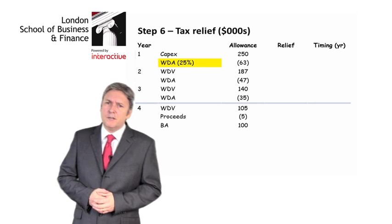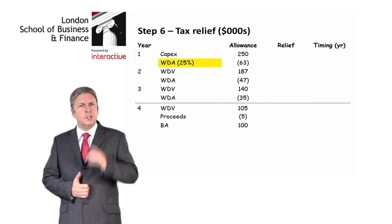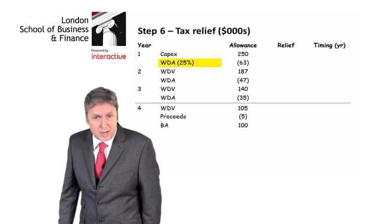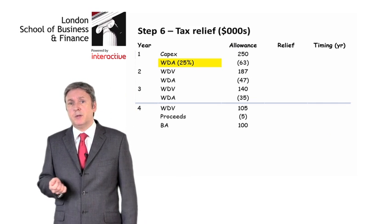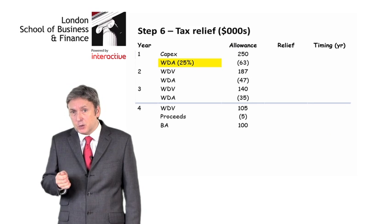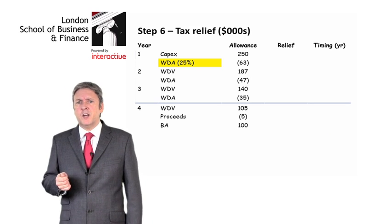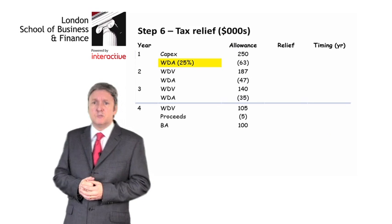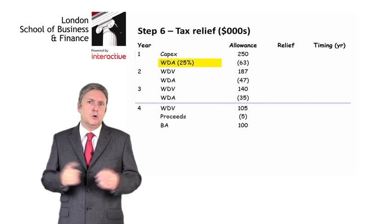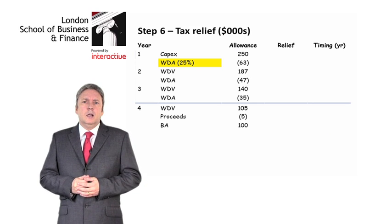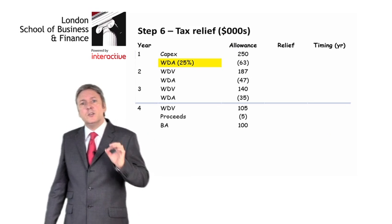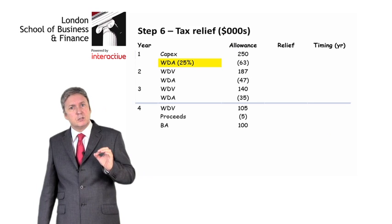Please note I've rounded everything to the nearest thousand. I have a tendency to round everything in investment appraisal to save time, because my belief is that your examiner doesn't care too much about accuracy, simply because investment appraisal relates to the future — a lot of things are uncertain — and there's a lot of rounding associated with the discount factors already. But the specific reason in this case is that we were told in the question to round to the nearest thousand, and if that's the case, we do as we are told.